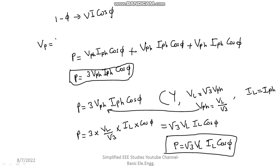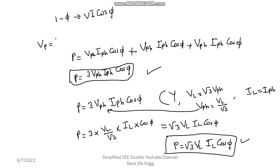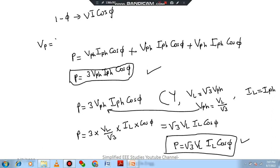Depends on the numerical example, you can use either form — in terms of phase quantity or in terms of line quantity; both are acceptable. At the end of the session you must have learned what star connection means, the relation between line and phase quantities: line current equals phase current, and line voltage equals root 3 times phase voltage. The three-phase power is P equals 3 × Vphase × Iphase × cos φ, or equivalently P equals root 3 × VL × IL × cos φ. If you have any queries, please put them in the comment box. Thank you for watching this video.